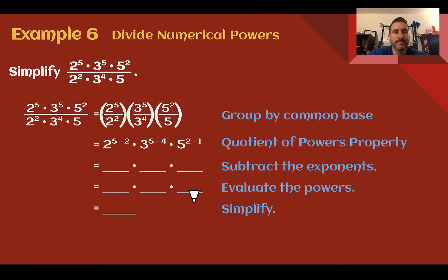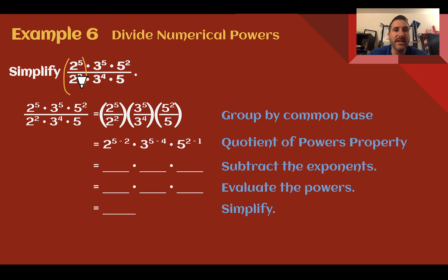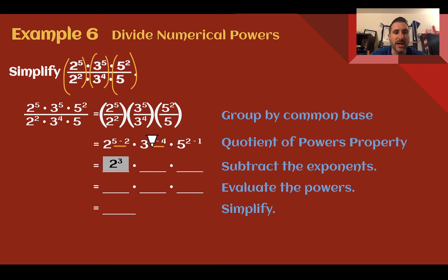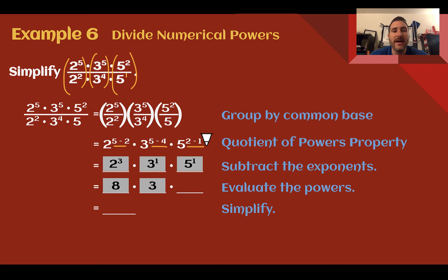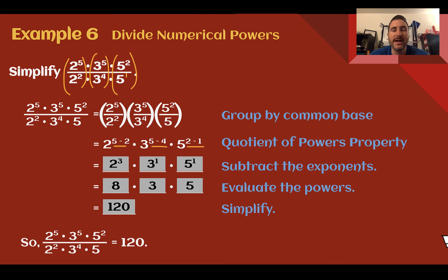Example 6: Divide numerical powers. Simplify 2 to the 5th times 3 to the 5th times 5 squared, all divided by 2 squared times 3 to the 4th times 5. This might look complicated, but if we break it down by the different bases, it becomes simple. Treat each base separately: 2 to the 5th divided by 2 squared gives 2 to the 3rd. 3 to the 5th divided by 3 to the 4th gives 3 to the 1st, or just 3. 5 squared divided by 5 to the 1st gives 5 to the 1st. Now evaluate: 2 to the 3rd is 8, times 3, times 5 — multiply it all together, we get 120.